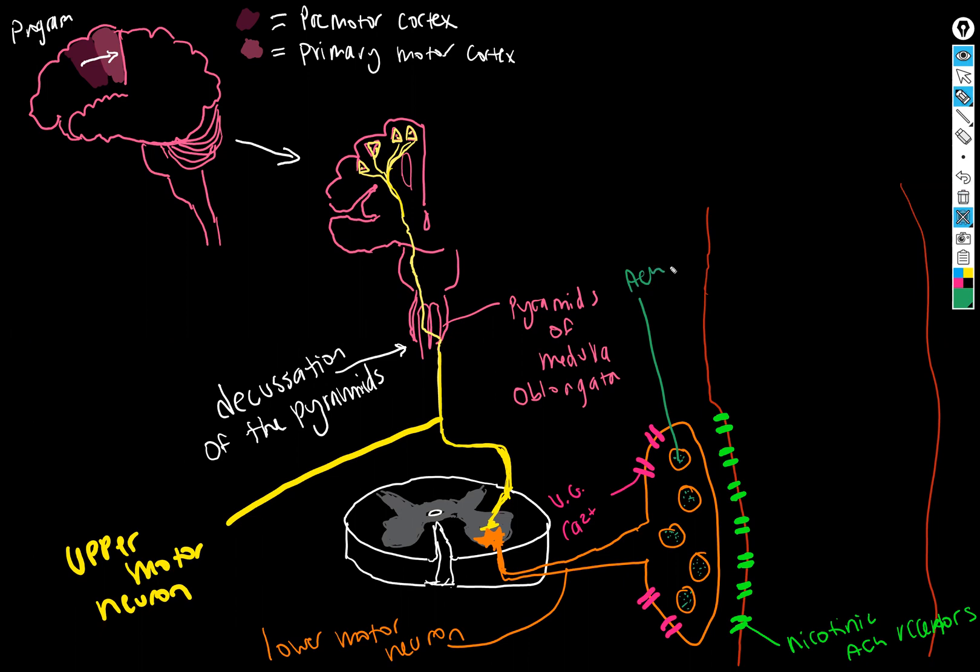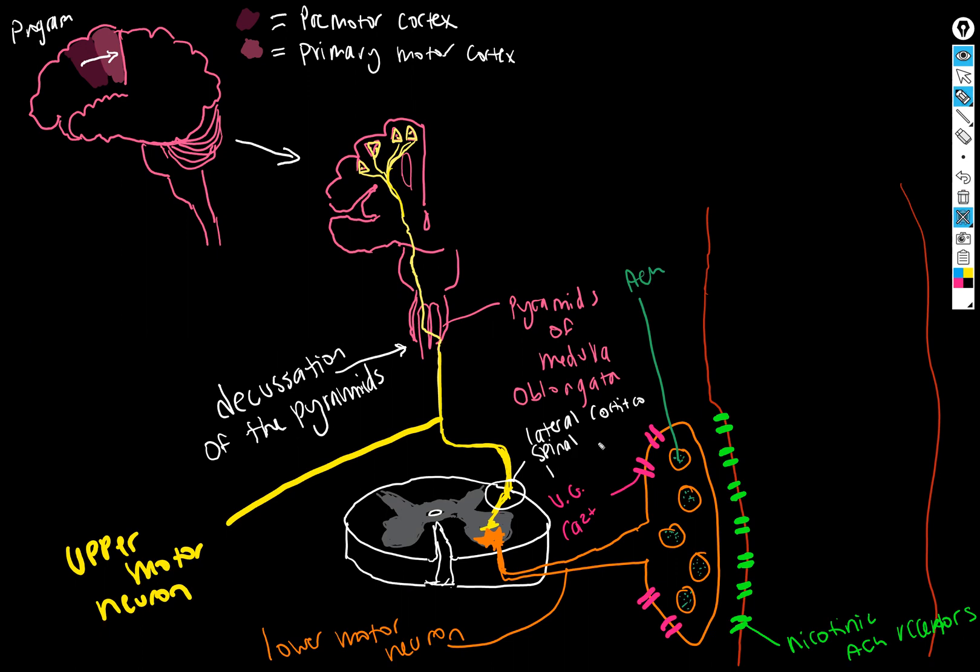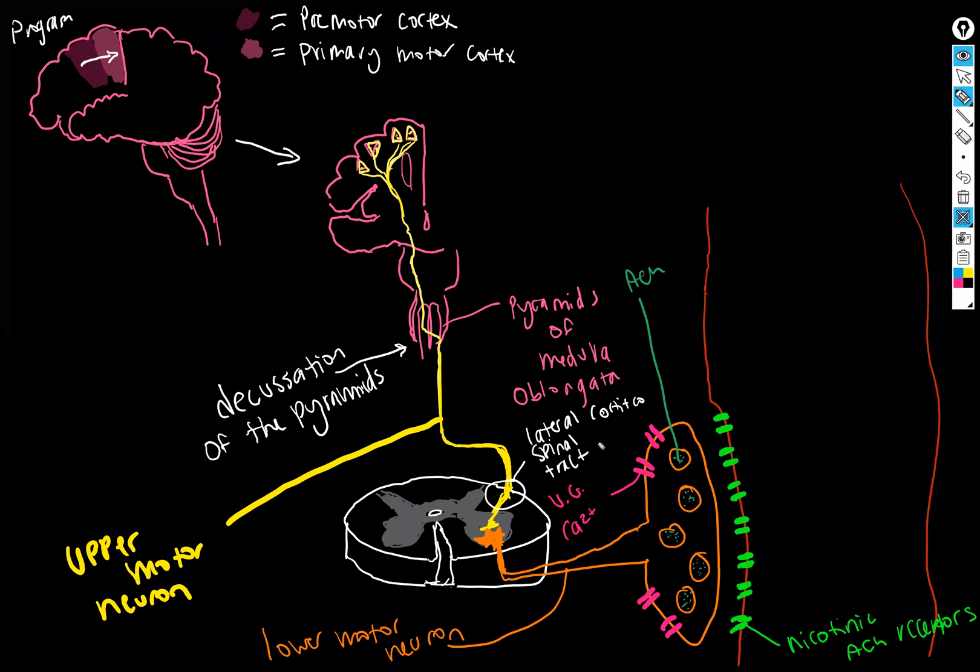So once the action potential descends from the brain, decusates in the medulla oblongata, and then goes through - oh I forgot to label that, that's important. And I'm running out of room. Lateral corticospinal tract. It's going to excite the lower motor neuron.